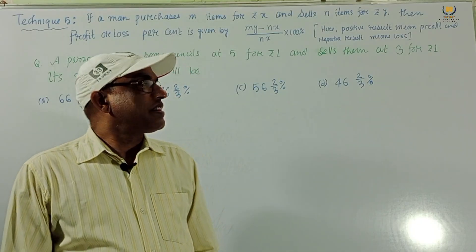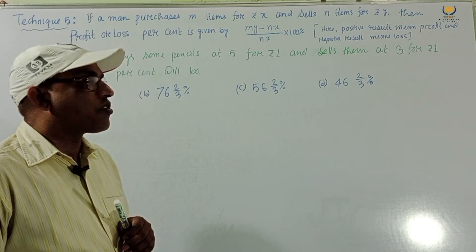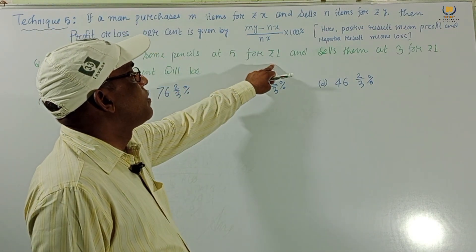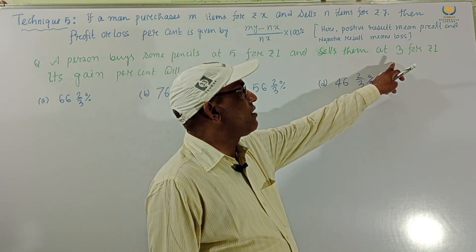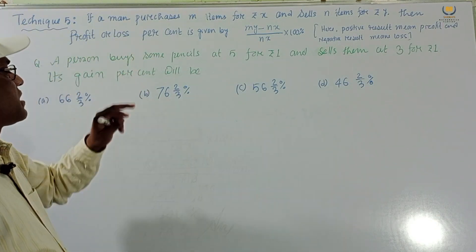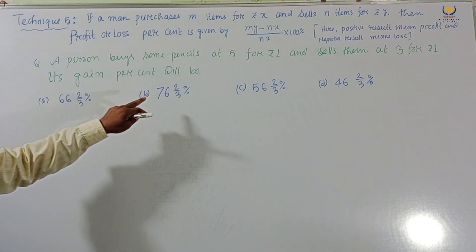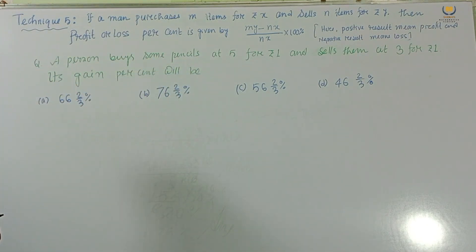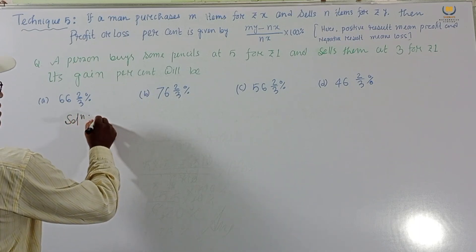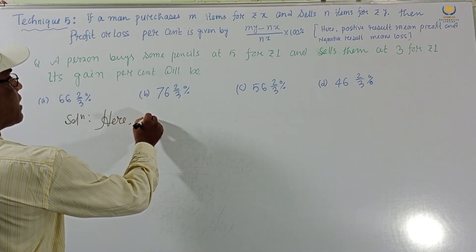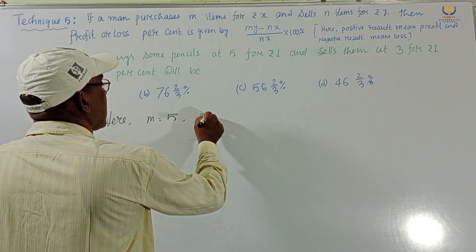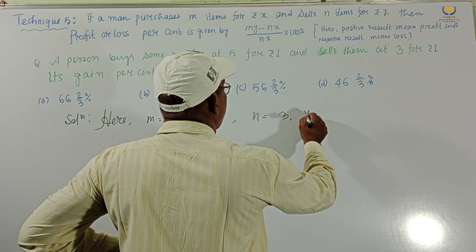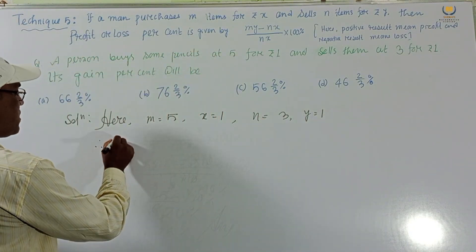Now consider another problem of the same type. A person buys some pencils at 5 for rupee 1 and sells them at 3 for rupee 1. The gain percent will be — options are 66 and 2/3 percent, 76 and 2/3 percent, 56 and 2/3 percent, 26 and 2/3 percent. Here m equals 5, x equals 1, n equals 3, y equals 1.